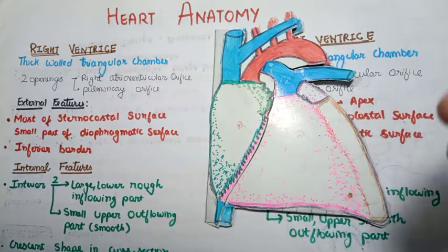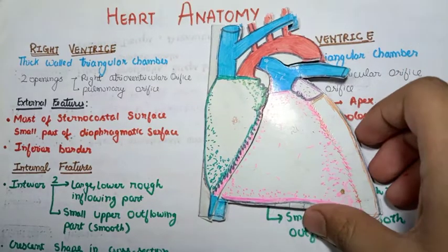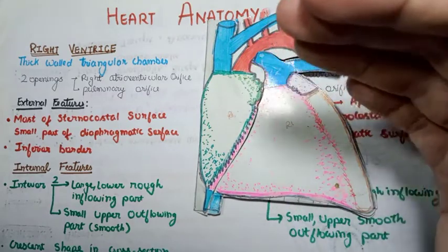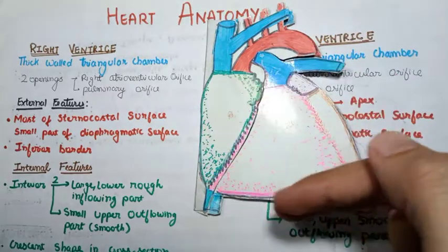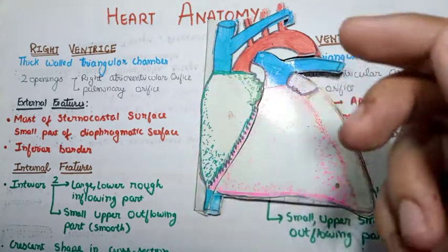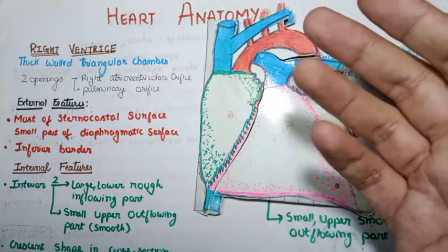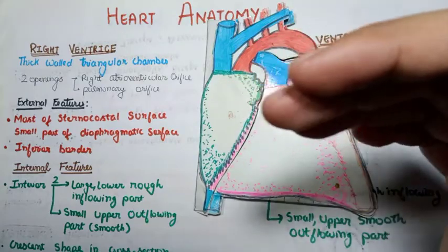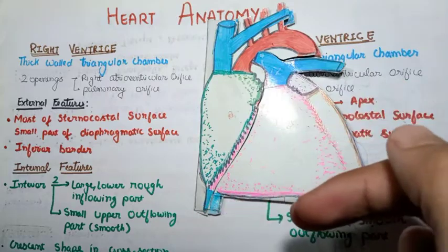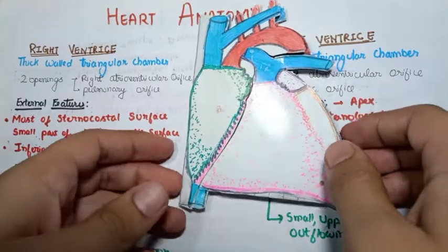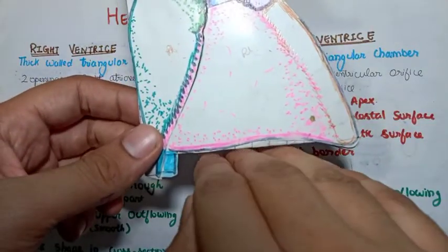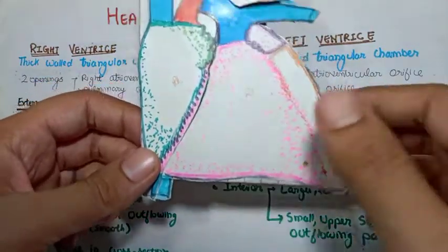Before starting, let me tell you about the borders and surfaces of the heart. We have four borders: the superior border, inferior border, left border, and right border. Among the surfaces, the most relevant here are the sternocostal surface — which is the anterior side — and the diaphragmatic surface, which is the lower surface.